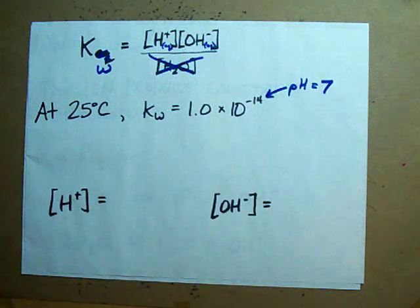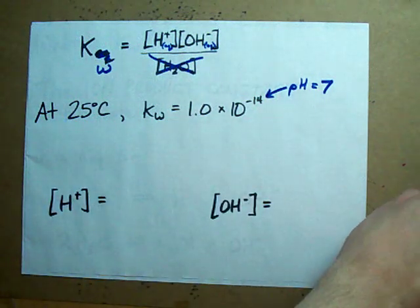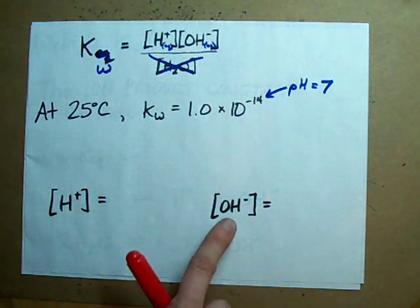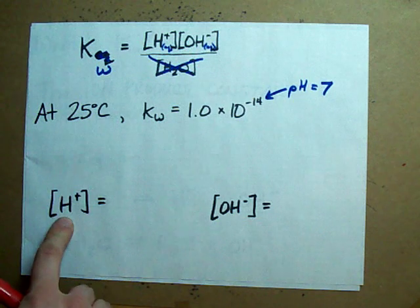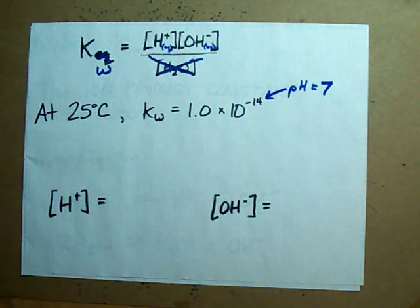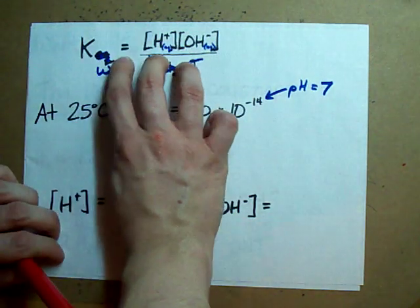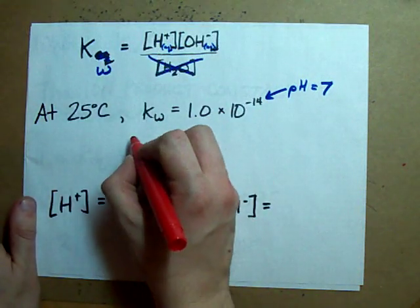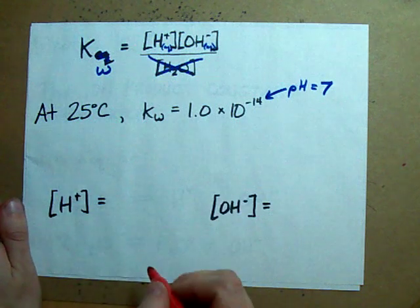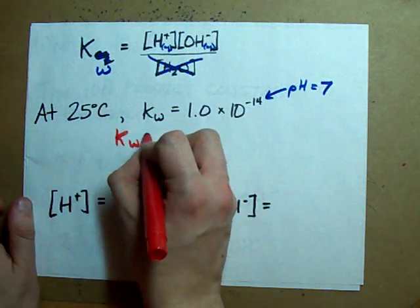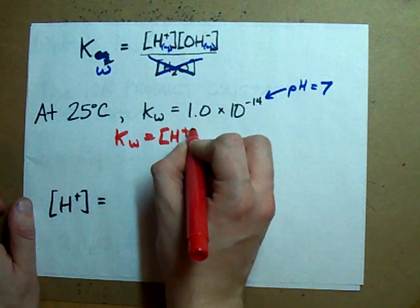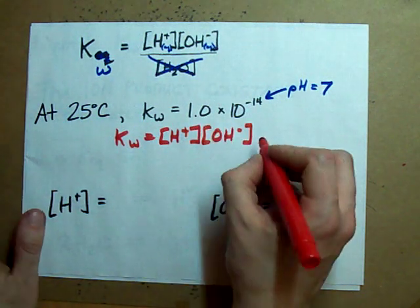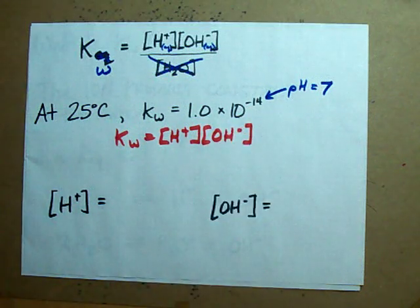Who cares about Kw anyways? Well, you will if you're ever given the concentration of OH-minus or H-plus in a solution. Because look, you've got a mathematical equation relating Kw and H-plus and OH-minus. Check it out. Kw is the concentration of H-plus times the concentration of OH-minus. Always 1.0 times 10 to the negative 14.